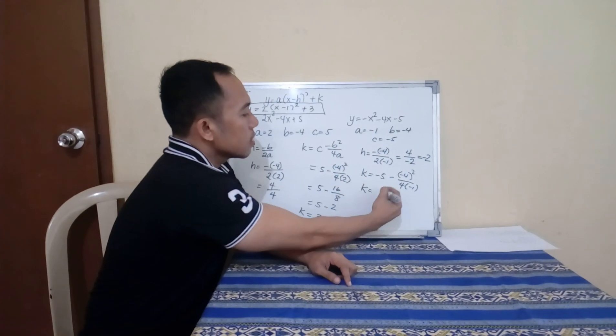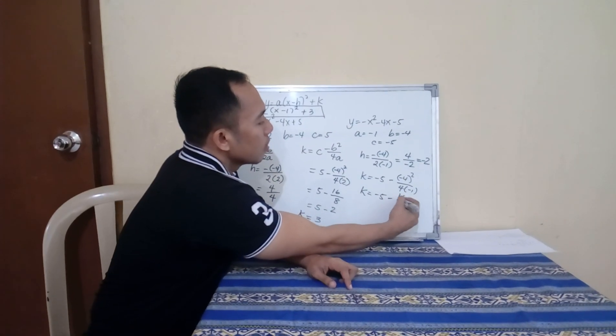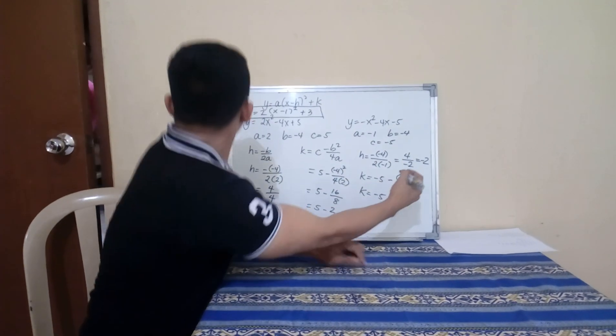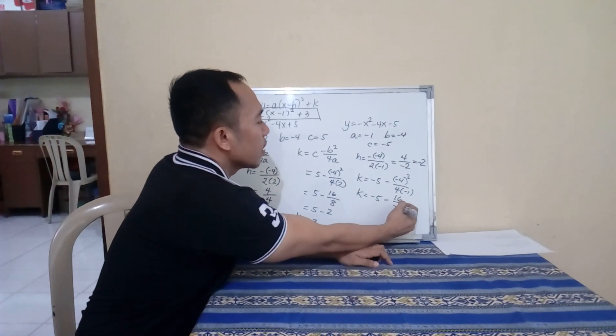K equals negative 5 minus, square of negative 4 is 16, over 4 times negative 1, which is negative 4. Divide this,